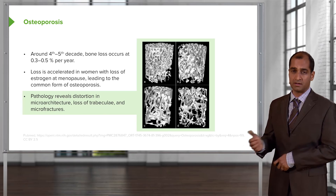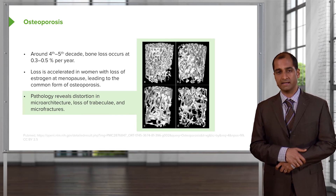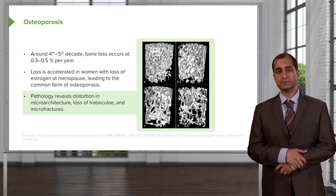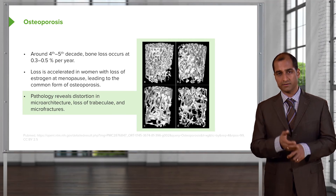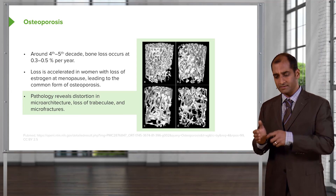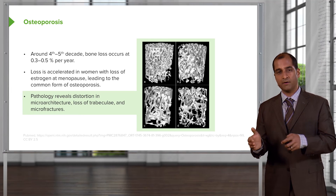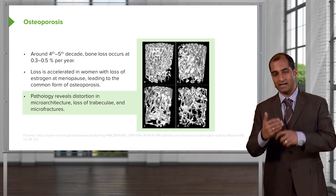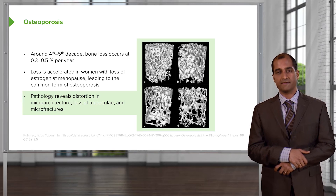It may then result in loss of trabeculae — we call this osteopenia — and may result in micro-fractures and compression fractures, especially of the vertebrae. Whenever you hear of osteoporosis, you're always worried about the elderly female who may slip and fall, maybe shoveling snow in the winter and slipping on ice, and experiencing a hip fracture.